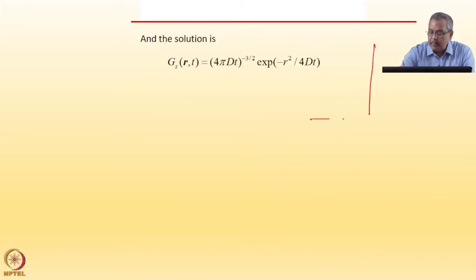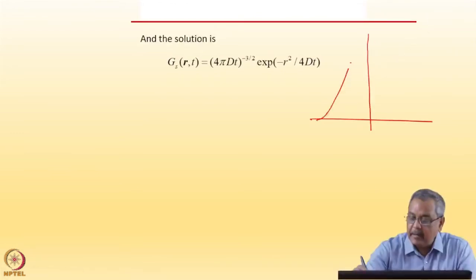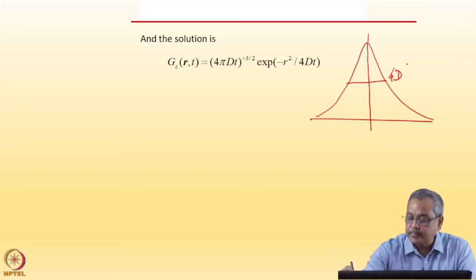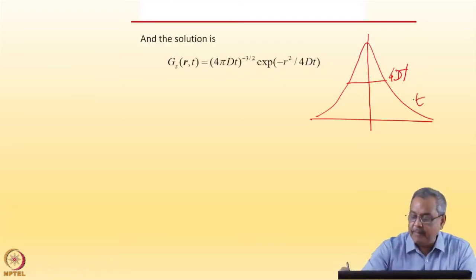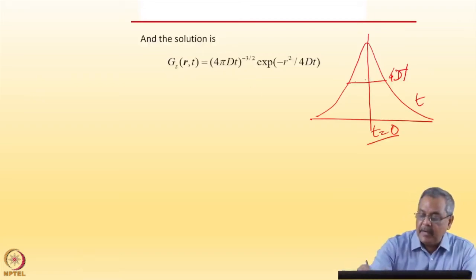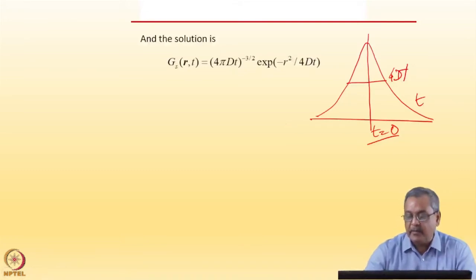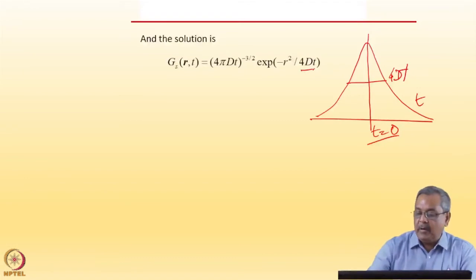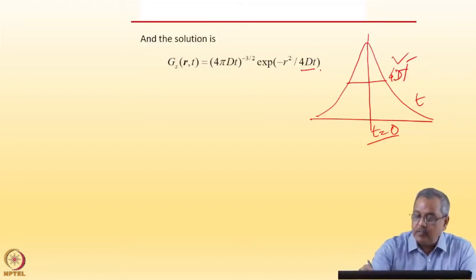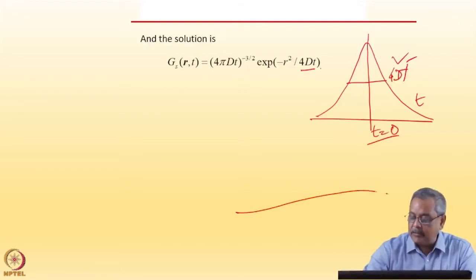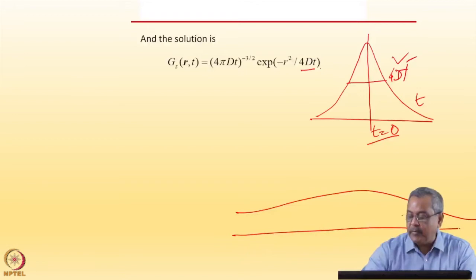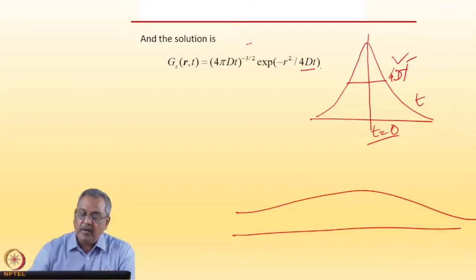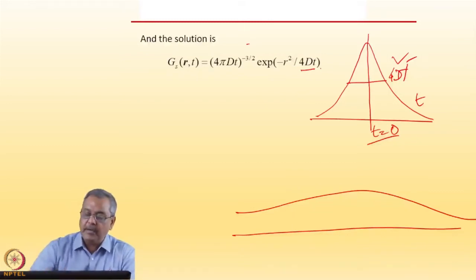For a diffusing particle at any time t, if the particle starts here there is a Gaussian — the Gaussian has a width at any time of 4Dt. So if the particle starts from the origin at t=0, as time goes on it opens up like a Gaussian that widens with width 4Dt. This means if I can measure the width at some time I can find D, and as t goes to infinity the particle is uniformly distributed over all space.